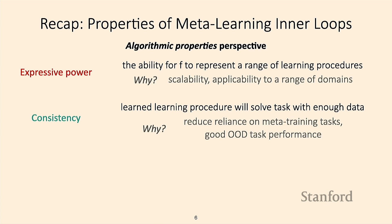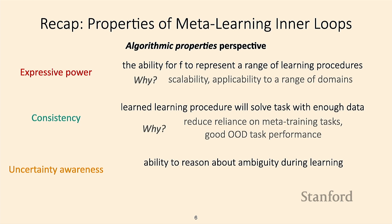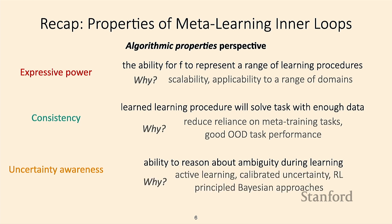These properties are important, but one property we haven't talked much about is the ability to reason about uncertainty — the focus of Bayesian meta-learning algorithms. By that, I mean the ability to reason about ambiguity in the learning process. This is important in active learning settings, in settings where you want calibrated uncertainty estimates, as well as in reinforcement learning settings. It also gives us approaches that are quite principled from the Bayesian standpoint, insofar as they're going to be maximizing the likelihood under some graphical model.